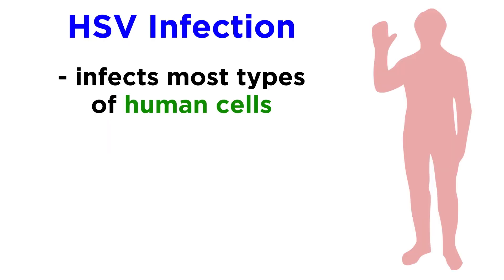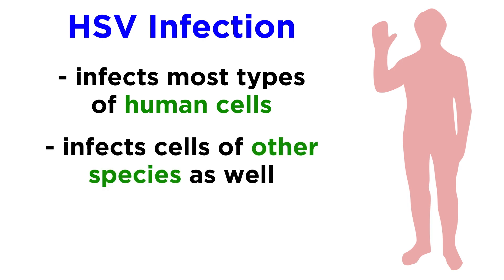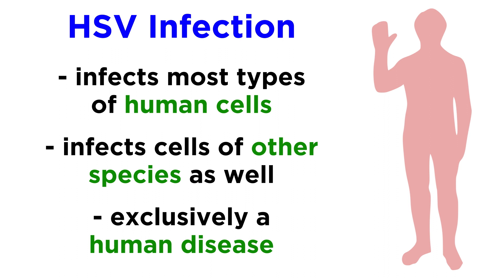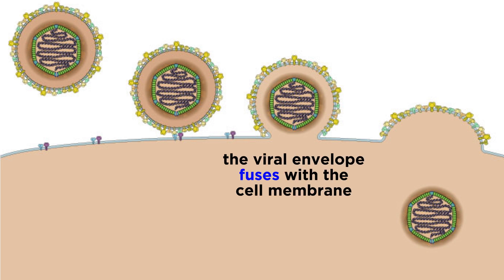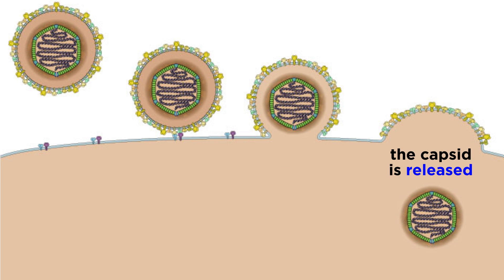HSV can infect most types of human cells, and even cells of other species. However, although HSV can infect other animal cells, HSV infection is exclusively a human disease. Once the virus has attached to a cell, it penetrates the host cell by fusing its envelope with the cell surface membrane, then releases its capsid into the cytoplasm of the host cell, along with some enzymes that help the virus make more copies of itself.